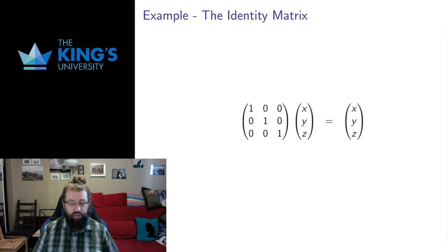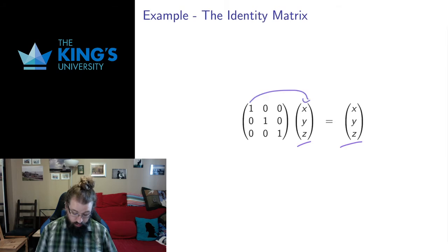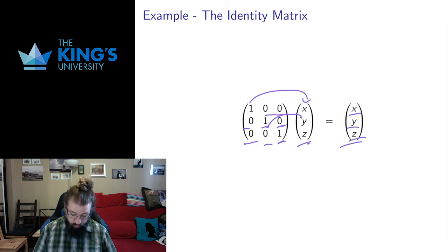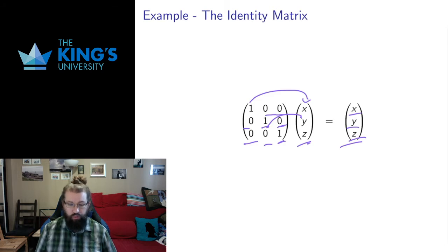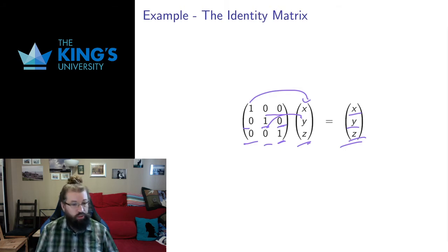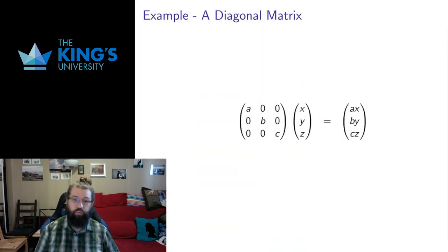The identity matrix is the unique matrix that sends every vector to itself. It has ones down the diagonal: the first row gives one times X plus zero times Y plus zero times Z, which is X; the second row gives zero times X plus one times Y plus zero times Z, which is Y; and the third row gives Z. That's why we have ones down the diagonal — the identity matrix represents the identity transformation.